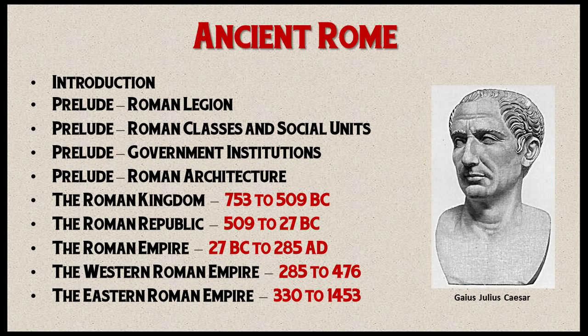Rome at its height was believed to be one of the largest urban centers of its time. It reached a population of about one million people — and just to give you an idea, London didn't reach that size until the early 19th century. With a city of that size, there was bound to be conflicts between the various classes, and that's what we're going to look at in this video.